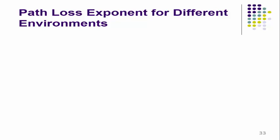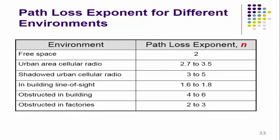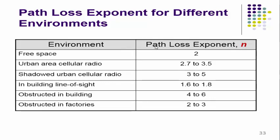Here we will see the path loss exponent for different environments. In the table, the first column gives the type of environment and the second column gives the path loss exponent value n. For free space, the exponent factor is 2. For urban area cellular radio networks, it is between 2.7 to 3.5. For shadowed urban cellular radio, it is between 3 to 5. In buildings with line-of-sight, the exponent factor is between 1.6 to 1.8.